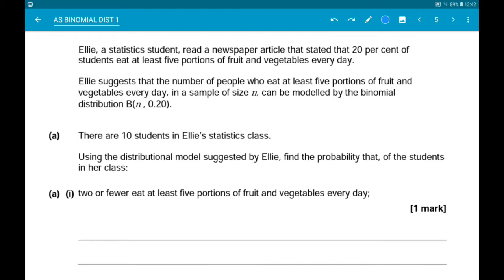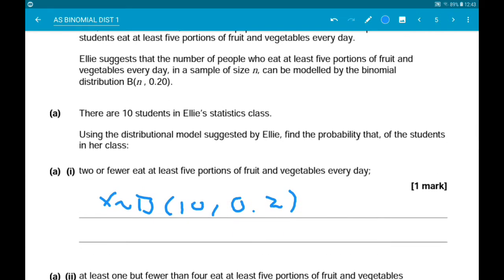So we need to define the distribution. So let's just use x again. So x is binomially distributed. This time n is 10 and p is 0.2. Now we want the probability x is less than or equal to 2. So use your calculator, we should get 0.678.